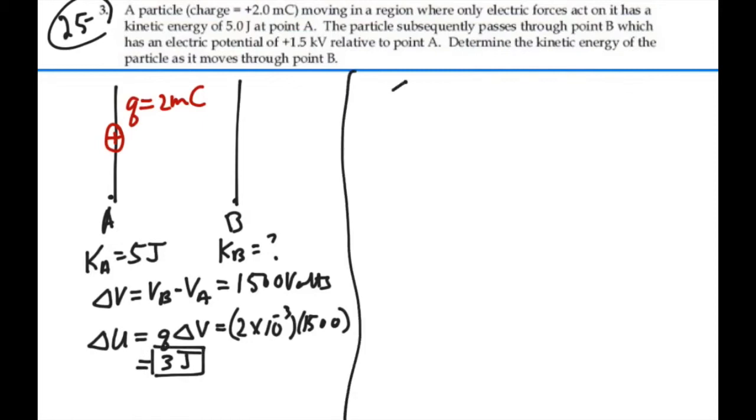We know that the change in kinetic energy plus the change in potential energy should equal zero, because there's no energy added to this situation. All of our energy is going to be redistributed. So our change in kinetic energy will be equal to the negative change in potential energy, or negative 3 joules.